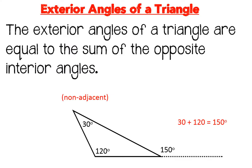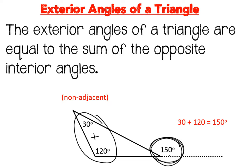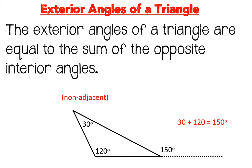Let's take a look at this. The exterior angles of a triangle are equal to the sum of the opposite interior angles. So if I have an exterior angle here, then this number will be equal to the sum — the adding of these two opposite, meaning non-adjacent, not-touching angles here. This is an adjacent angle to the exterior angle; these two are supplementary.